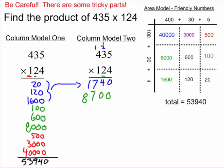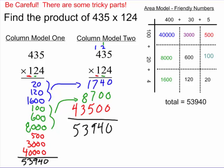And again, you'll notice there's that component. And lastly, I'm going to be multiplying by 100. So I have to put in two placeholders of 0. 1 times 5 is 5. 1 times 3 is 3. And 1 times 4 is 4.